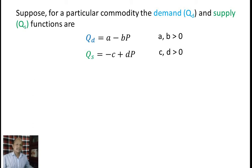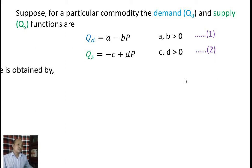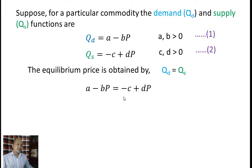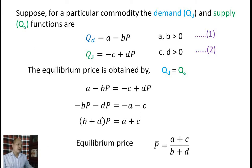Suppose, for a particular commodity, the demand and supply functions are: qd equals a minus bp, where a, b greater than 0 (equation 1), and qs equals minus c plus dp, where c, d greater than 0 (equation 2). The equilibrium price is obtained by equalizing quantity demanded with quantity supplied, that is qd equals qs, or a minus bp equals minus c plus dp. After simplifying, we get equilibrium price p-bar equal to (a plus c) divided by (b plus d), that is equation number 3.